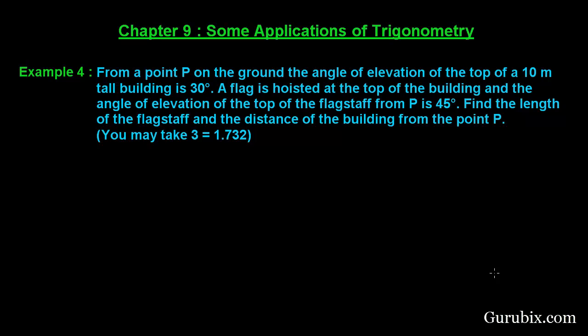Welcome friends. Let us solve example number 4 of chapter 9. The example says: from point P on the ground, the angle of elevation of the top of a 10 meter tall building is 30 degrees. A flag is hoisted at the top of the building and the angle of elevation of the top of the flag staff from point P is 45 degrees. Find the length of the flag staff and the distance of the building from point P. You may take square root of 3 equals 1.732.